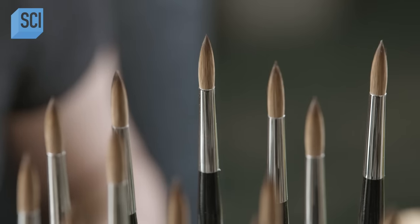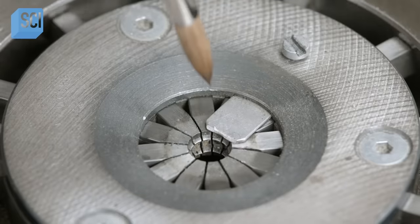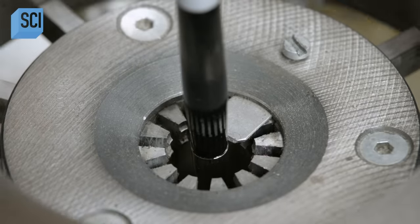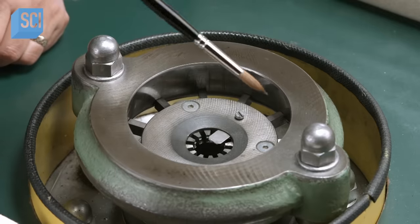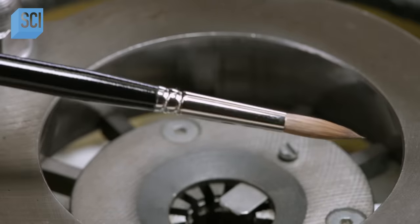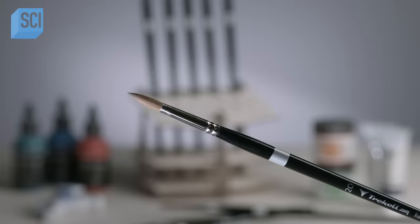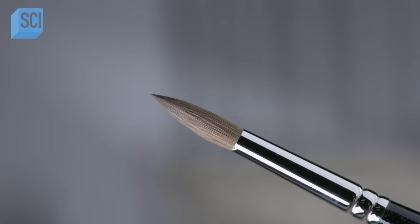The worker inserts the ferrule into a crimping machine, which has been loaded with a die that's the correct diameter for this brush handle. The machine crimps the ferrule tightly to the handle, attaching it permanently. Once that glue hardens, the paintbrush is finally ready. From this point onward, it's in the artist's hands.